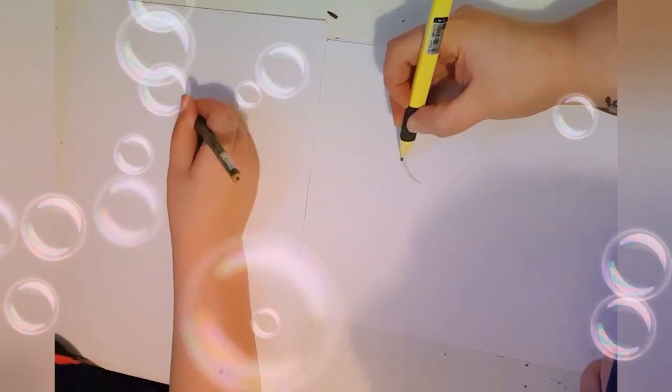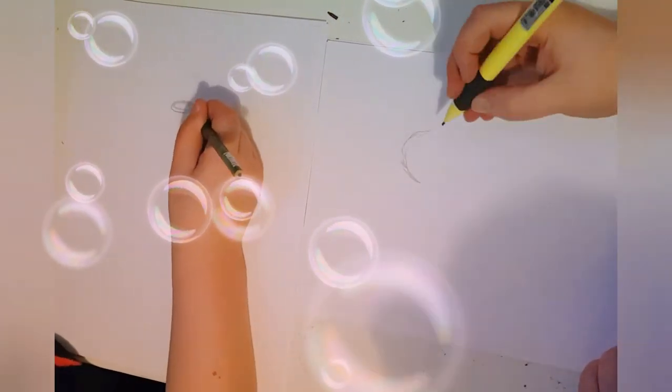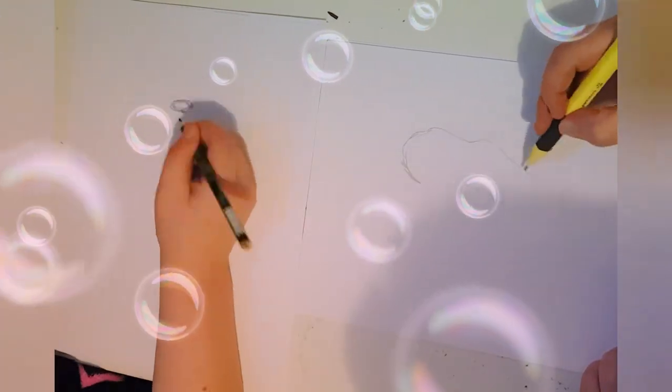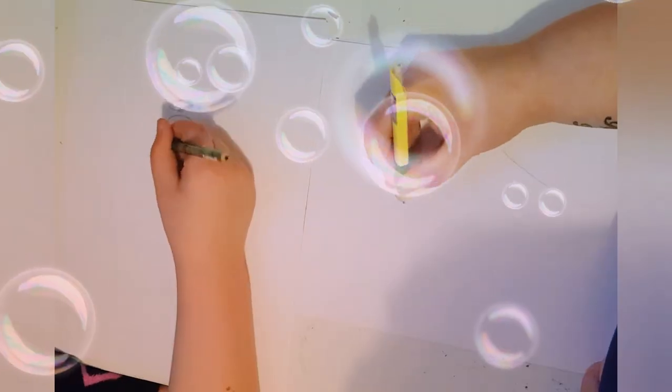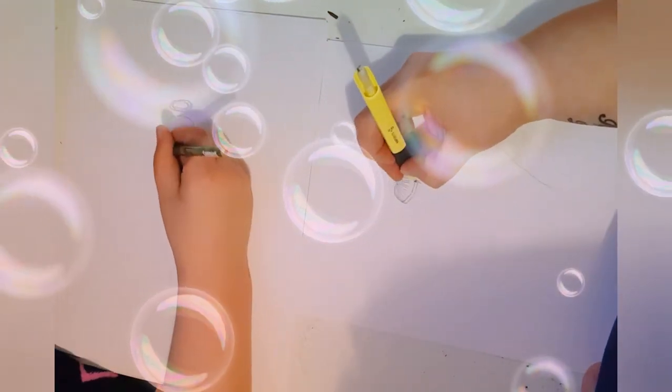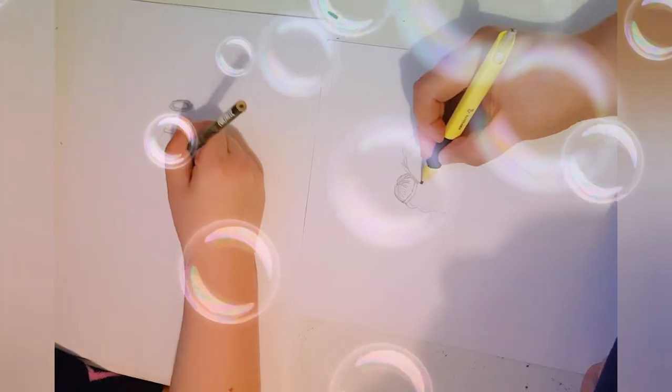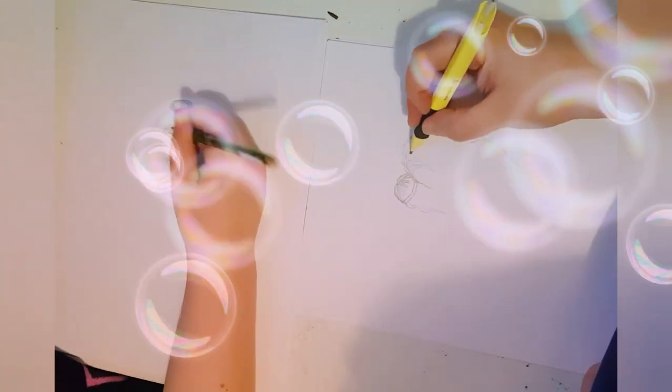So today we're going to be drawing an angel. Mine is the one on the left, my mom's is the one on the right. I'm gonna start off with the halo and the hair is really long and it's nice.